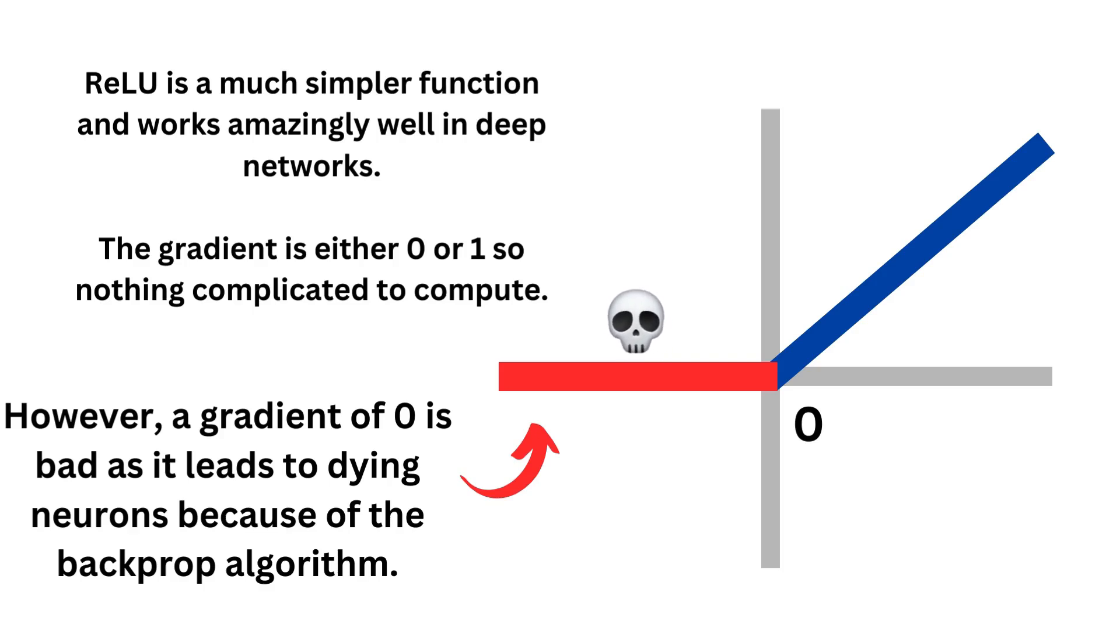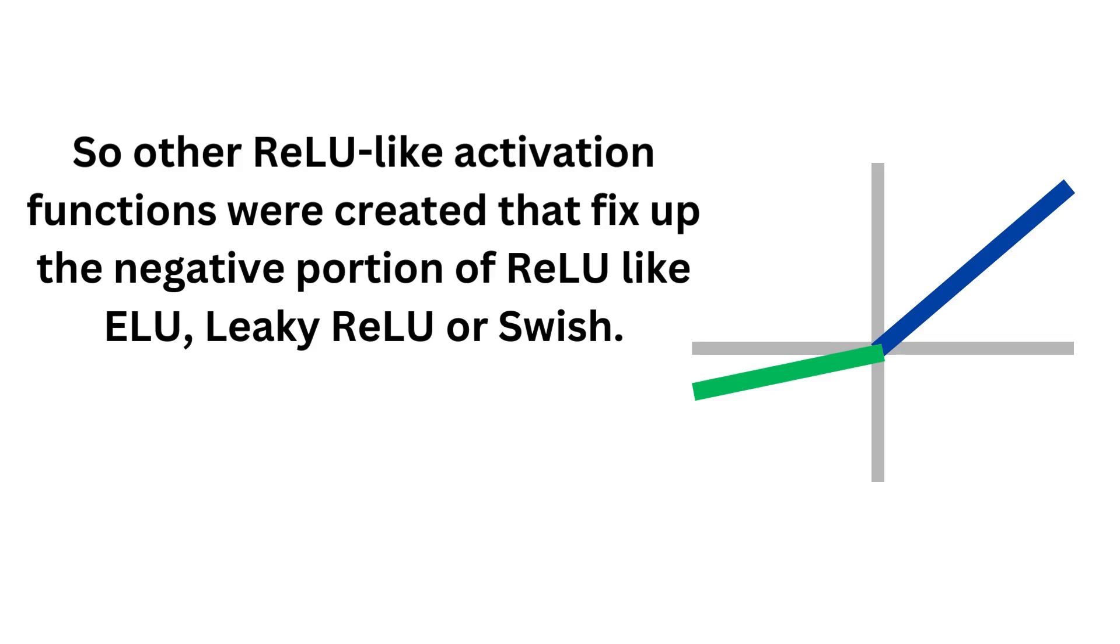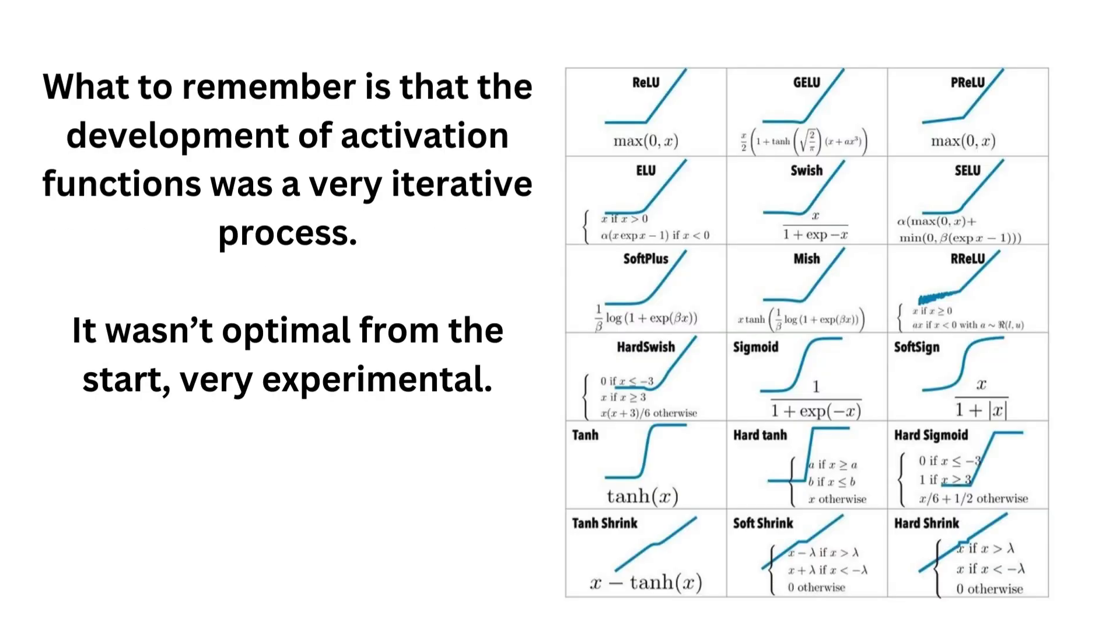So other Relu-like activation functions were created that fixed up the negative portion of Relu, like Elu, Gelu, Leaky Relu, or Swish. What you remember from this whole history is that the development of activation functions was a very iterative process.